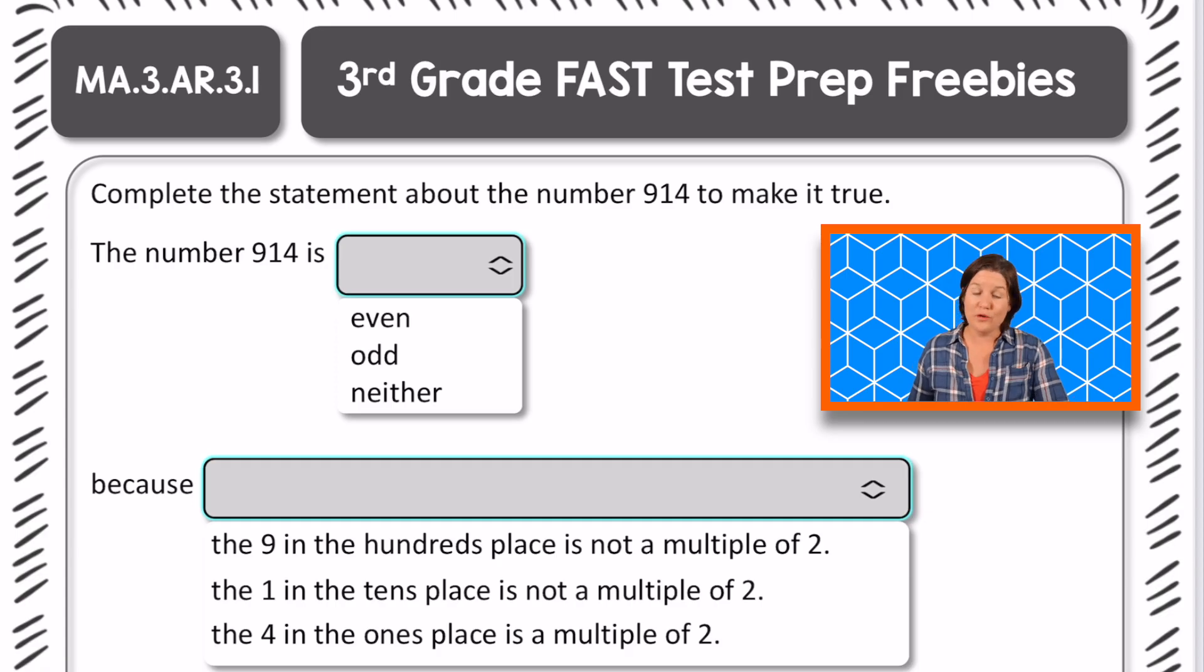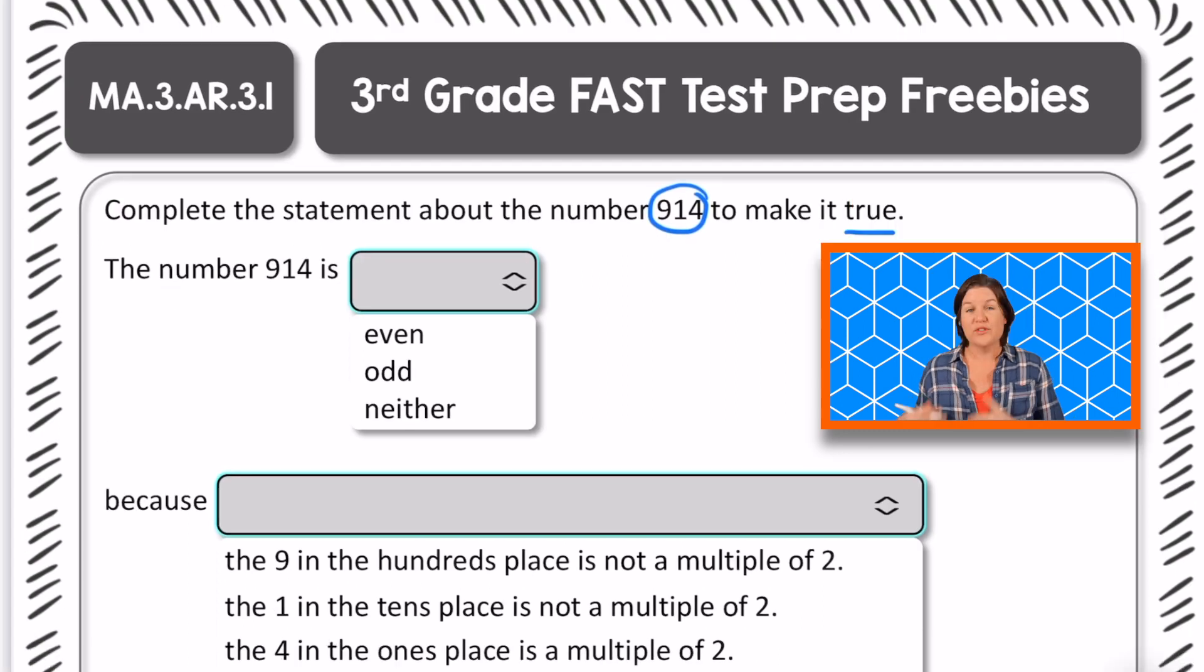All right, third grade, let's go over this problem. So it says to complete the statement about the number 914 to make it true. So this is an editing task choice answer, which means that on a computer-based test, we would click this option right here and this option right here to drop down that menu to select our answer.